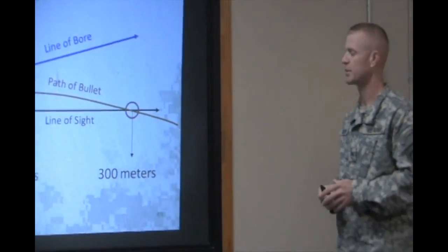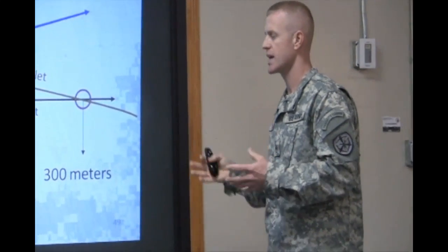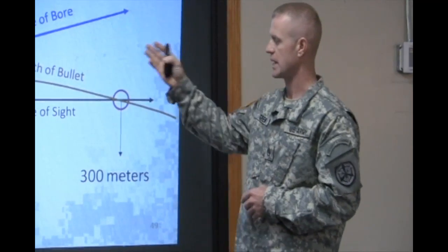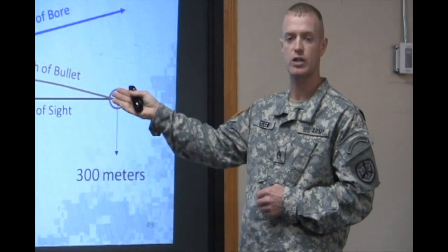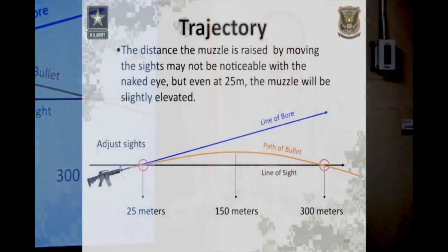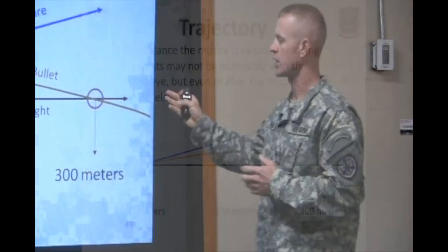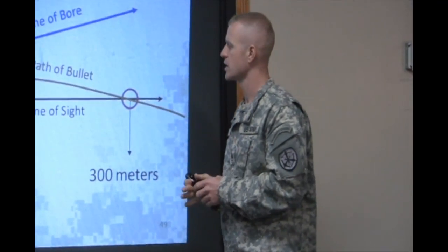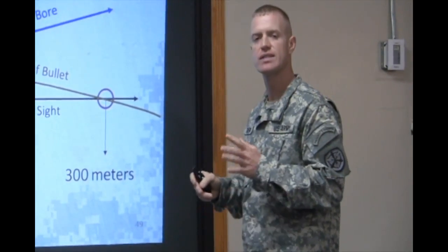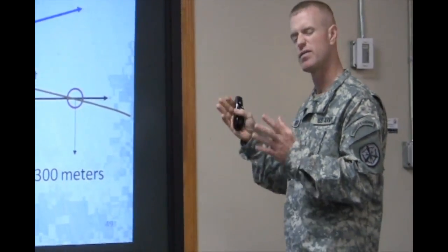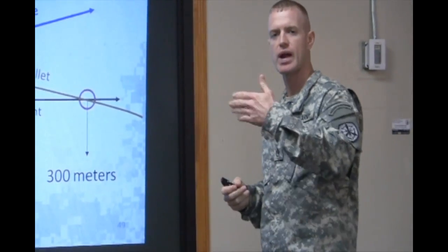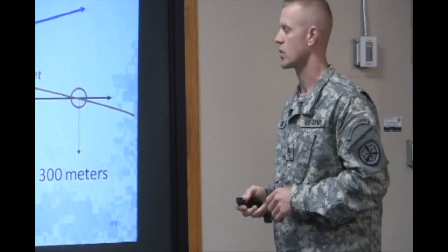With the M16 and M4 family of rifles, it just so happens that the path of that bullet crosses the line of sight twice — at 25 meters and at 300 meters. This is what allows us to get a 25-meter zero and consequently a 300-meter zero as well. Between 150 and 180 meters is the highest part of the trajectory of that round — normally about 7 to 10 inches above the line of sight. Therefore, when shooting at targets at that mid-range, it's helpful to aim just a little bit low on that target.